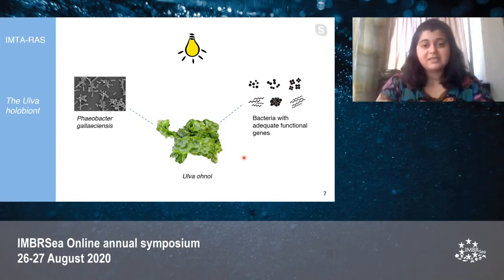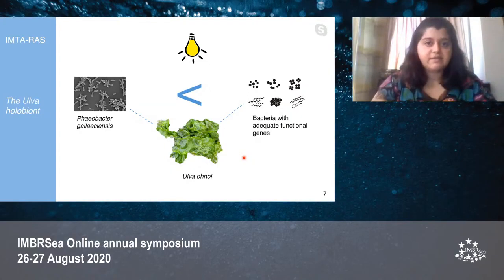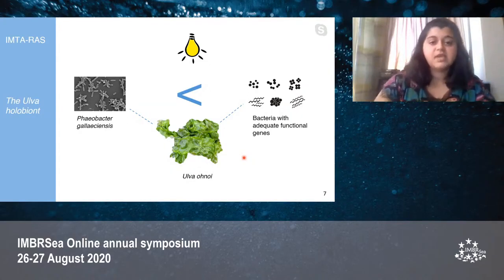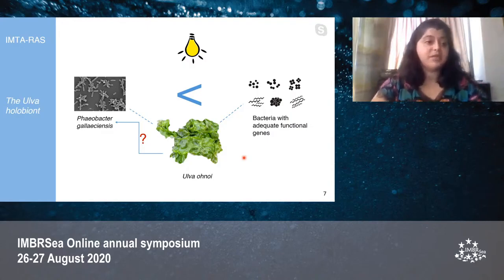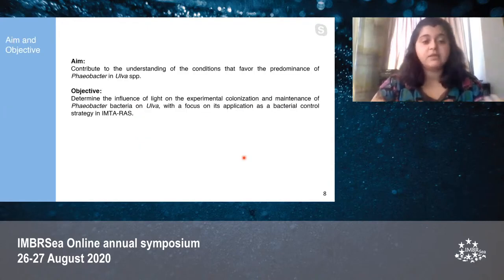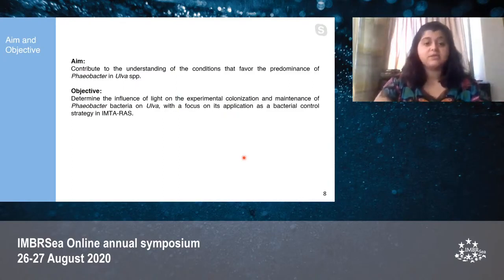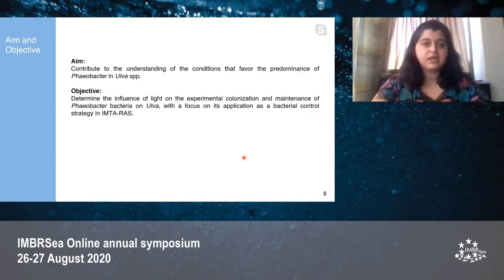Recent experiments showed that high light intensity negatively affects the ability of Phaeobacter to maintain a biofilm on the Ulva ohnoi surface. This could be due to an algae response that could affect Phaeobacter gallaeciensis. This brings us to the aim and objective of this master's thesis. The aim is to contribute to understanding the conditions that favor the predominance of Phaeobacter in Ulva species, and the objective is to determine the influence of light on the colonization and maintenance of Phaeobacter on Ulva, with a focus on its application as a bacterial control strategy in IMTA-RAS.